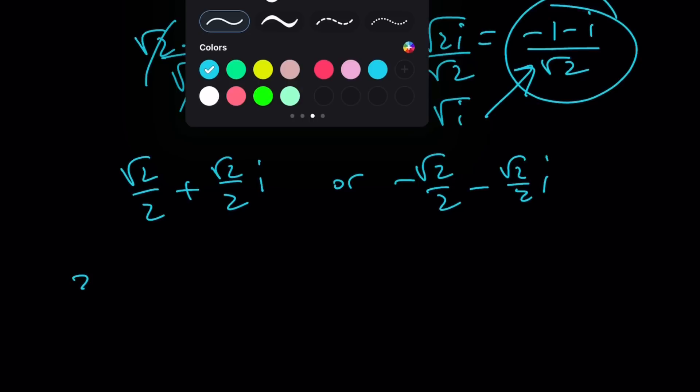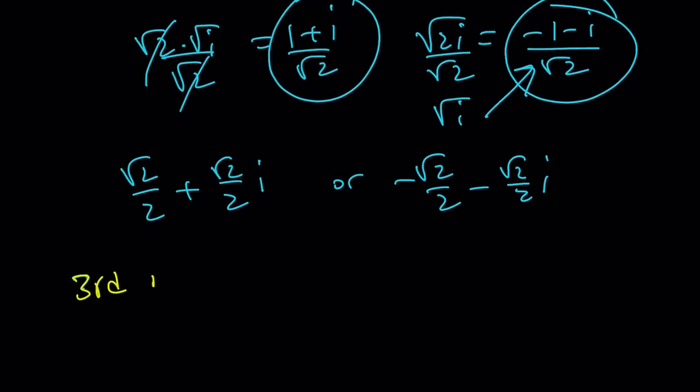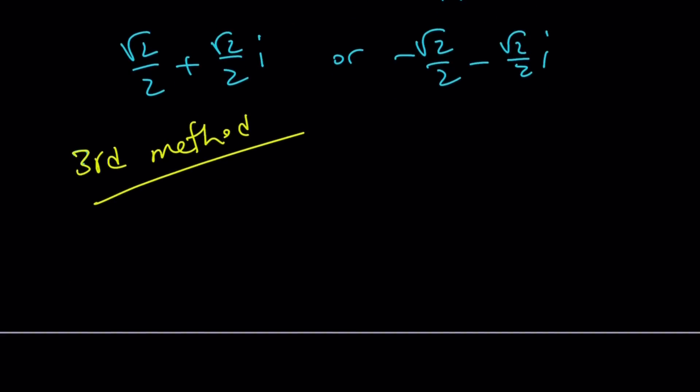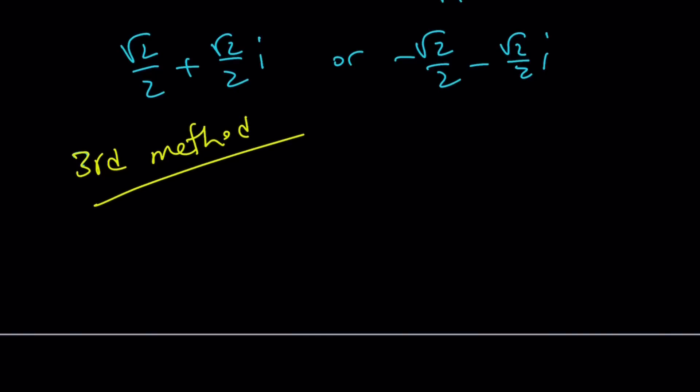Third method, and please let me know which method is your favorite. So the third method is going to look like this. I'm going to write it in polar form. How do you write i in polar form? To write i in polar form, you got to remember i is 0 plus 1i. So 0 comma 1 represents i on the imaginary axis, in other words.